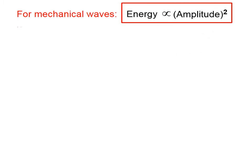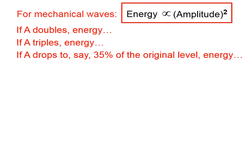For mechanical waves, the energy carried by the wave is proportional to the amplitude of the wave squared. In other words, if you have a wave of a certain amplitude and then we double that amplitude, the energy doubles squared, which is a factor of 4. If the amplitude were to triple, the energy would increase by a factor of 3 squared, which is 9.